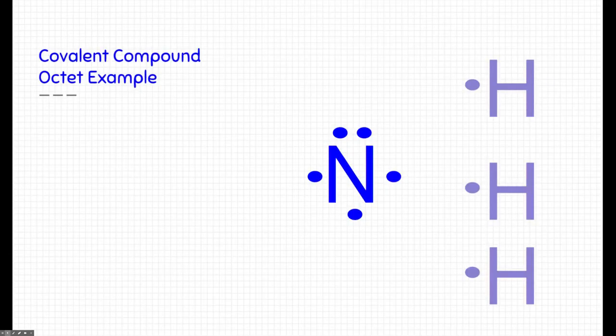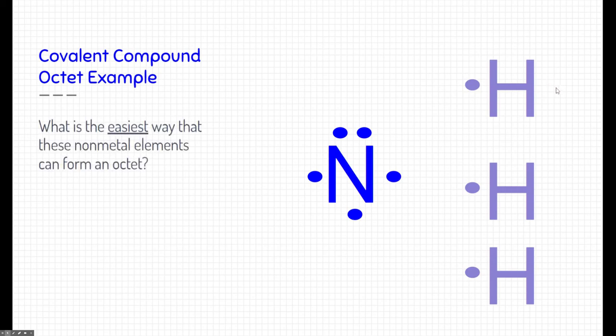All right, let's take a look at a covalent compound octet. So here, what's the easiest way for these non-metal elements to form an octet? Remember, nitrogen has a high electronegativity. It's in the upper right-hand corner of the periodic table. It does not want to give away its electrons. It's very attracted to them.